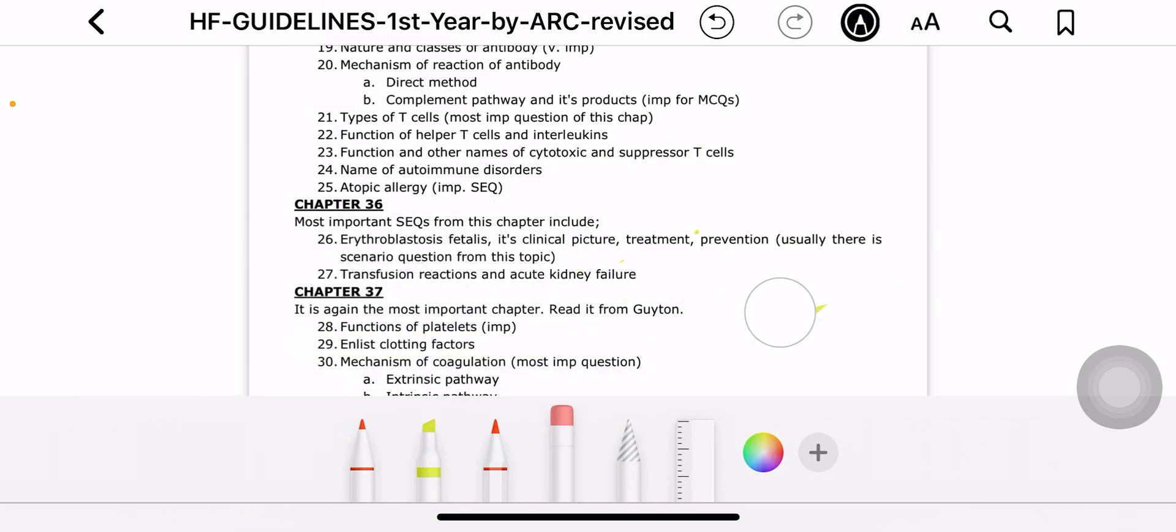For hemophilia scenario, remember this: whenever they talk about hemophilia, clotting time is increased and bleeding time is normal. That is the hint for hemophilia. But for von Willebrand disease, both bleeding time and clotting time will be increased. Then thrombocytopenia - thrombocytopenia will give you platelet decrease with the hint of bleeding time increase. Obviously, if platelets decrease, then bleeding time increases. That is an important hint for these scenario questions of thrombocytopenia and hemophilia.